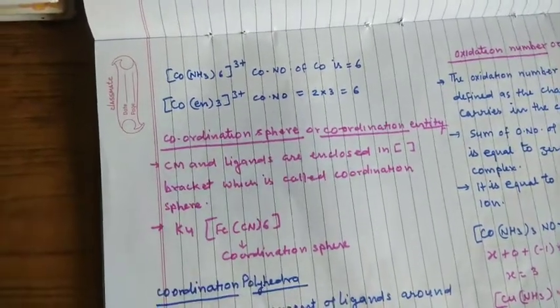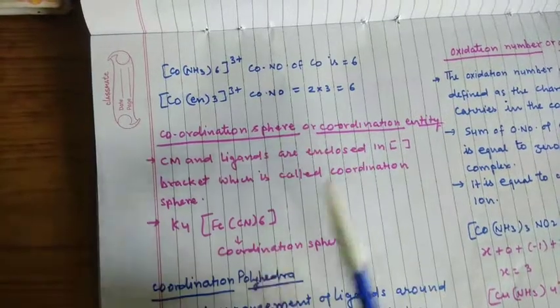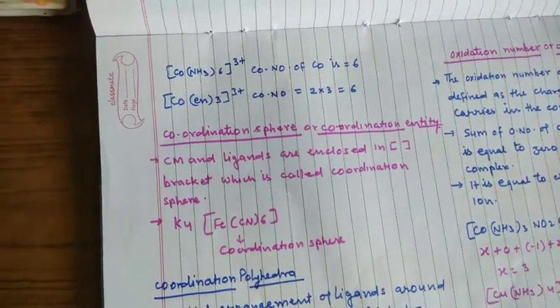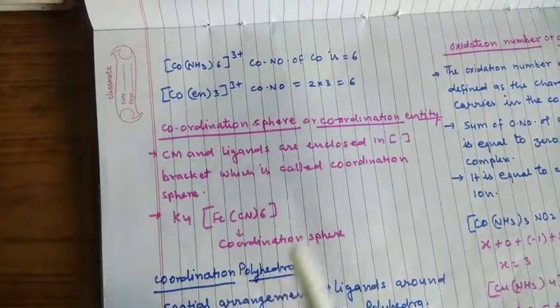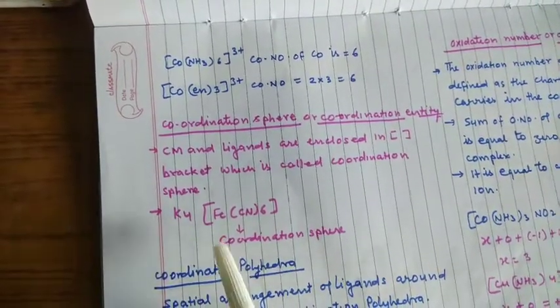Coordination sphere, इसको coordination entity भी कहा जाता है। Coordination entity हमेशा square bracket में लिखा जायेगा। Square bracket के अंदर सबसे पहले metal होगा।